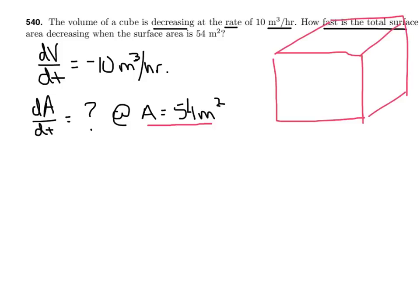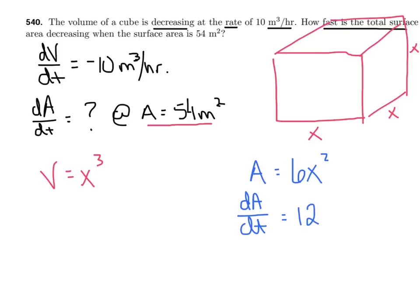I'm going to let x equal the length of each side. The volume turns out to be x³. The surface area — each face has an area of x², and there are six faces — so surface area is 6x². We want to find dA/dt, so let's differentiate with respect to t. Using the power rule with chain rule, we get dA/dt = 12x · dx/dt. What we're missing is the value of x at this precise moment and the rate dx/dt, so we'll need to use the other given information.